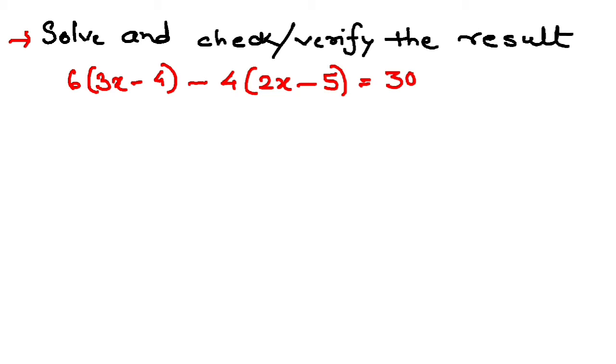So I have taken a simple question here: solve and check or verify the result. The equation given is 6(3x - 4) - 4(2x - 5) = 30.